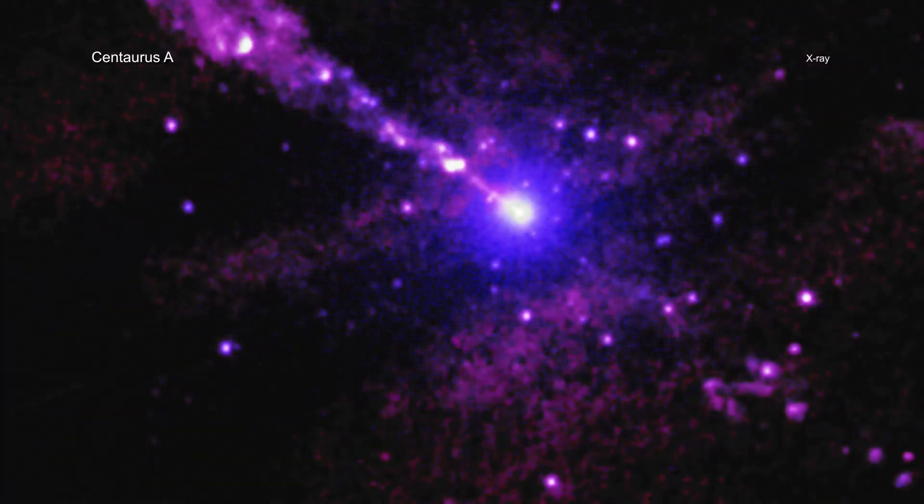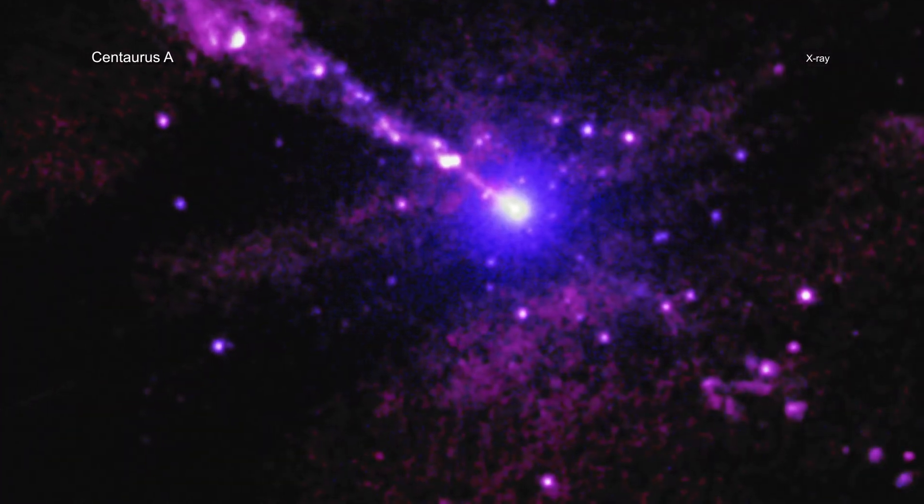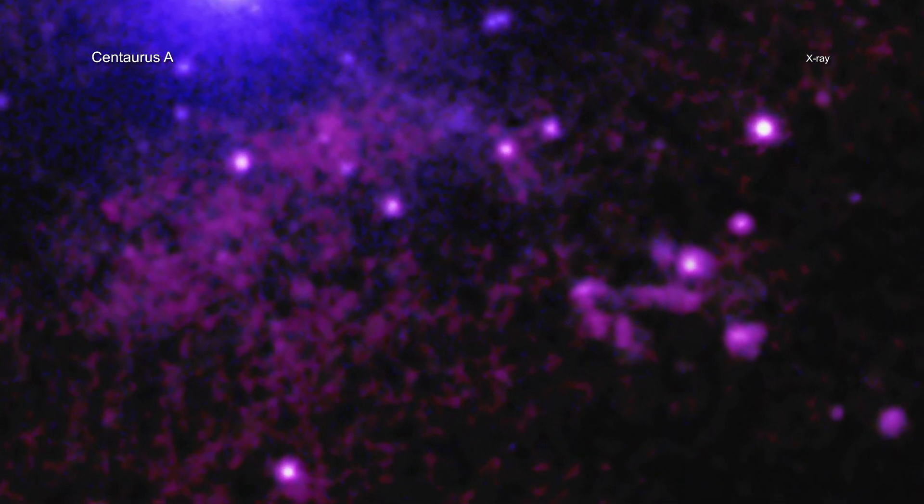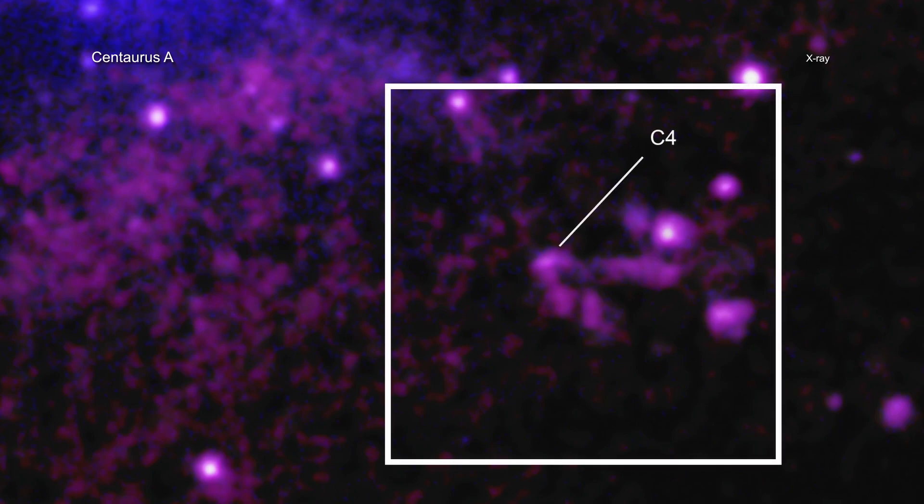Using NASA's Chandra X-ray Observatory, astronomers have found an unusual mark from a giant black hole's powerful jet striking an unidentified object in its path.